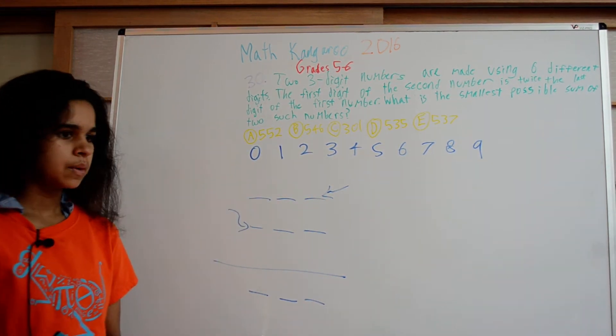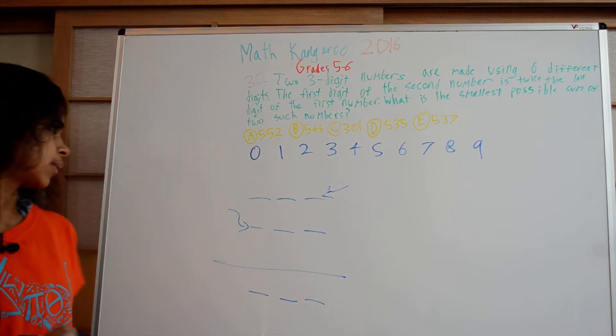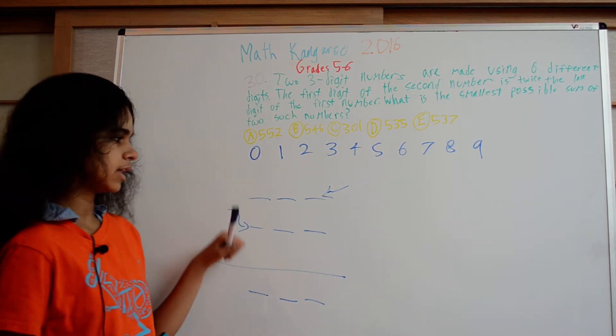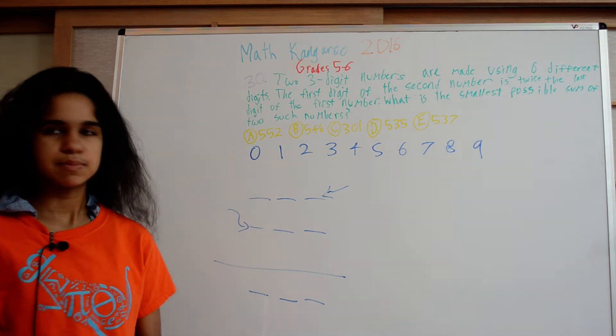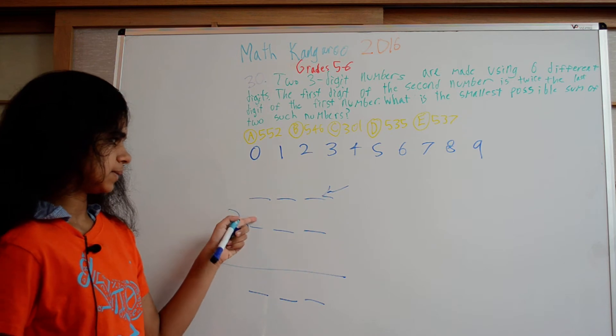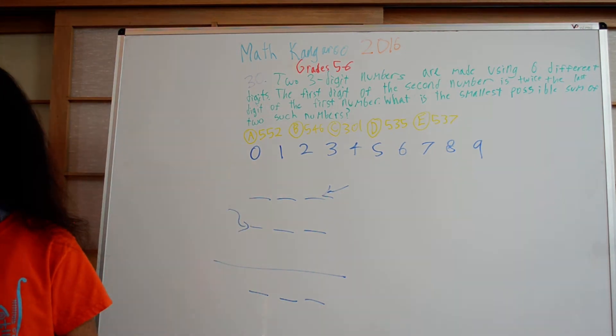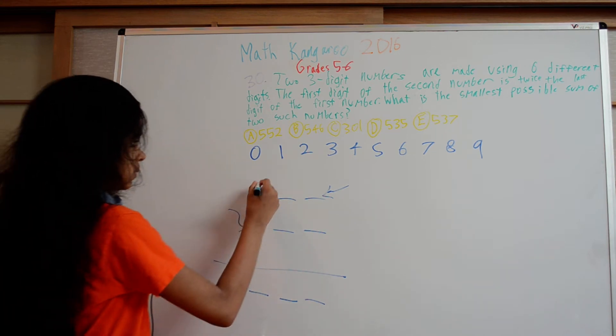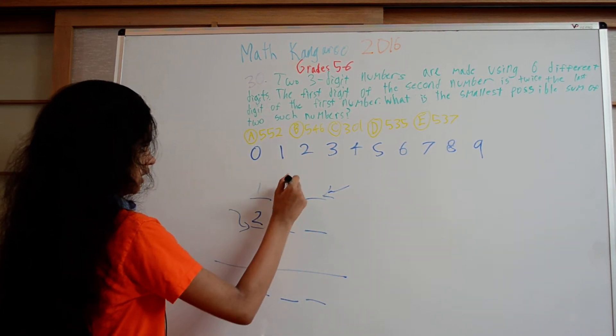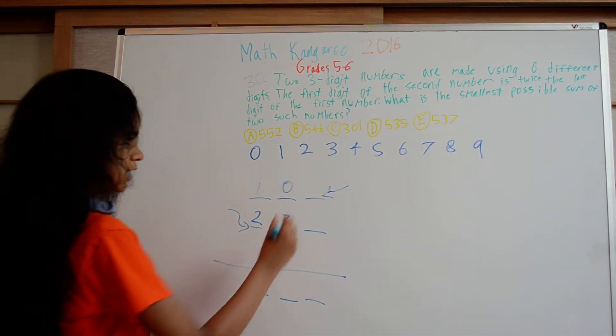If we were just trying to make the numbers as small as possible, we would fill in all the spots with the smallest numbers possible. We can't put zero in either of these spots because that would make it a two-digit number. But we could put one and two, then here zero and three, and it doesn't matter what order because we'll get the same sum anyway.